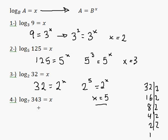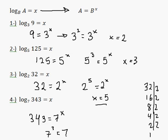What about here? I'll kick the 7 over: 343 is equal to 7 to the power of x. 343 is actually 7 to the 3, therefore x is equal to 3. How do we recognize that 343 is 7 to the 3? Well, this one's a little bit harder, but if you divide 343 by 7, you get 49. 49 divided by 7 again is 7. So 7 times 7 times 7 is 343.